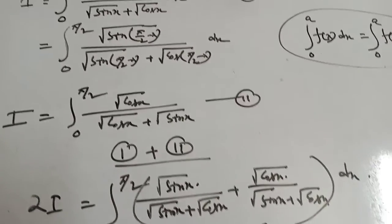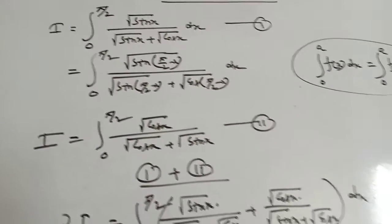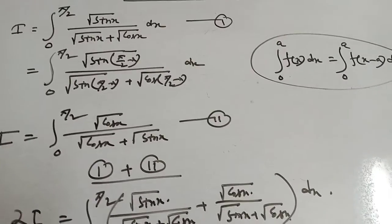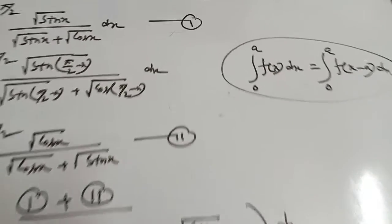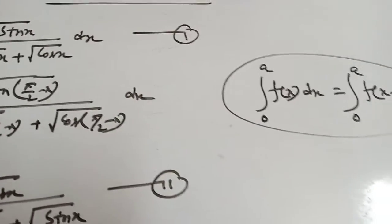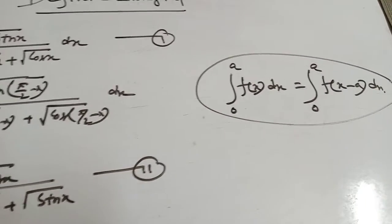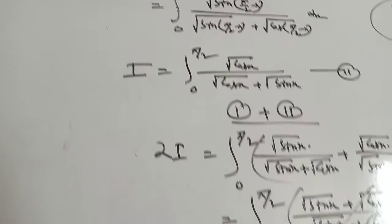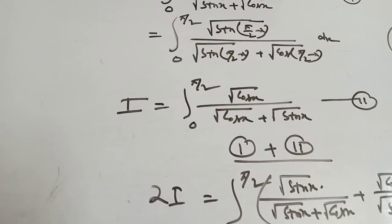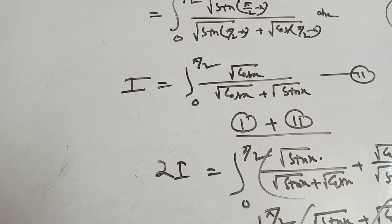This is the most important sum based on the properties of definite integration. The key property used is: integral from 0 to a of f(x)dx equals integral from 0 to a of f(a minus x)dx. Thank you.